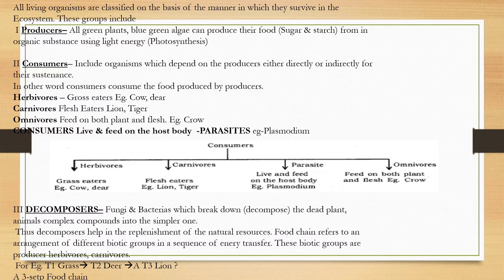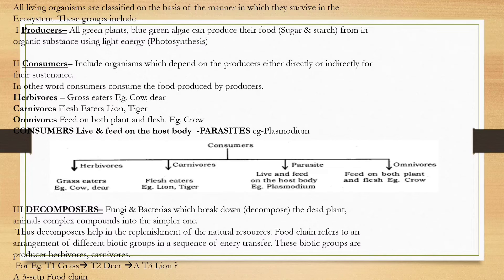Omnivores feed on both plants and flesh. Consumers which feed on a host body are called parasites — examples include Plasmodium and Cuscuta. Decomposers are fungi and bacteria; they decompose dead plant and animal bodies into simple components, thus helping in recycling of natural components and cleaning up the environment.